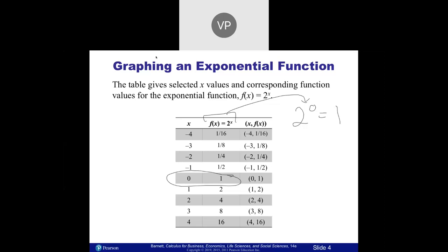What matters most is you plug in some points and start to get a feel for where these are. There are nine different points. In any function you're graphing, you've got to make a table, plug in points, and calculate y values. Plugging in 1 gives 2 to the first, which is just 2. The negative ones are important: negative 1 means the reciprocal of the base. You take the base of 2, flip it upside down — that's where we get 1/2. 2 to the negative 2 is 1 over 2 squared, which is 1/4.